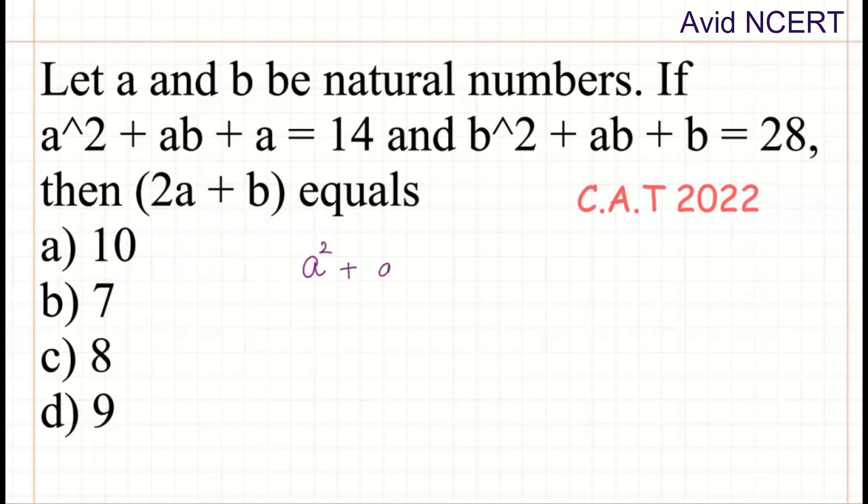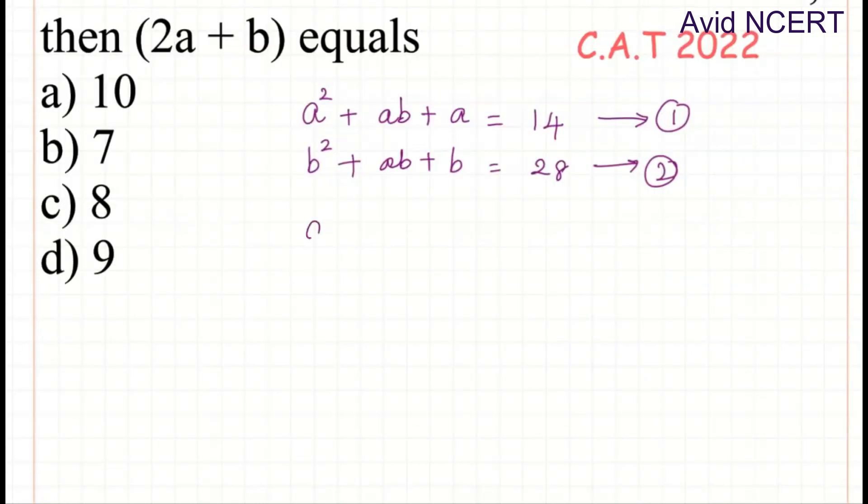So A² + AB + A equals 14 and B² + AB + B equals 28. The first equation can be rearranged as taking A as common, which is A(A + B + 1) equals 14, where A + B + 1 equals 14/A.